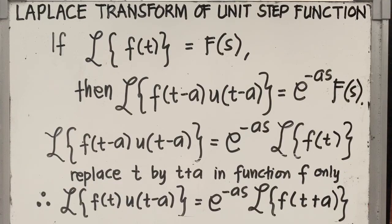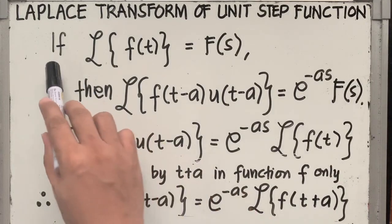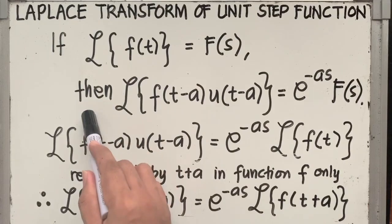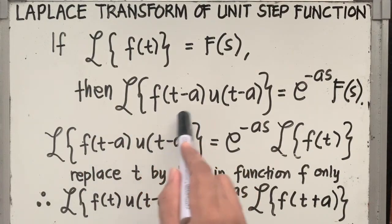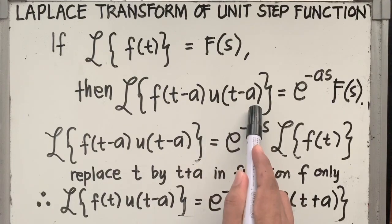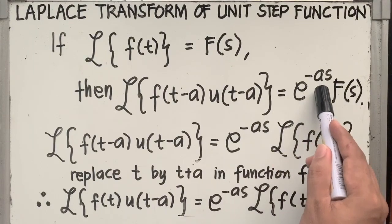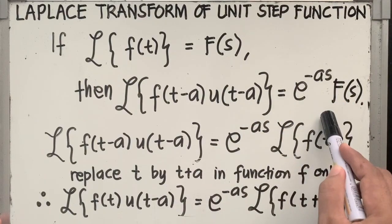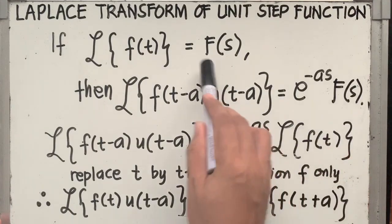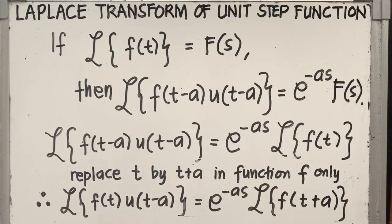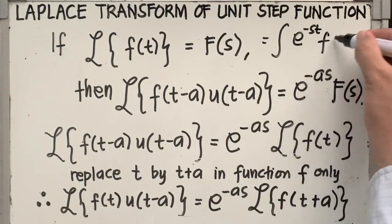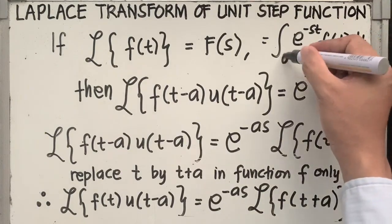Now let's proceed to finding the Laplace transform of the unit step function. If the Laplace of f of t is equal to F of s, then the Laplace of f of t minus a times u of t minus a is equal to e raised to minus as times F of s. Remember that this right-hand side results from using the definition of the Laplace transform, which is the integral of e raised to minus st times f of t dt with limits from 0 to infinity.